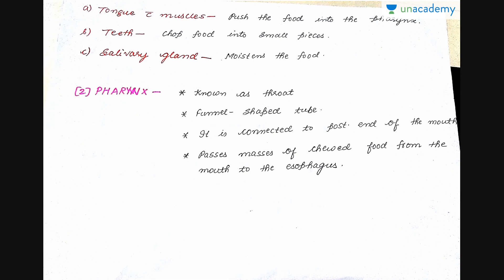The next part is the pharynx. The pharynx is also known as the throat, which is a funnel-shaped tube connected to the posterior end of the mouth. It passes the masses of chewed food from the mouth to the esophagus.